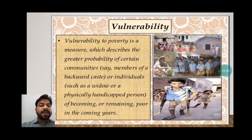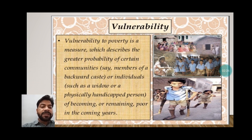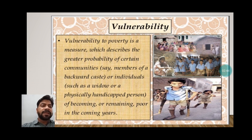Next is vulnerability. Vulnerability to poverty is a measure which describes the greater probability of certain communities — say, members of a backward caste — or individuals such as a widow or a physically handicapped person, of becoming or remaining poor in the coming years. These are the classes which feel isolated and separated because they cannot match the mainstream.